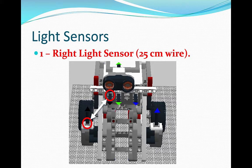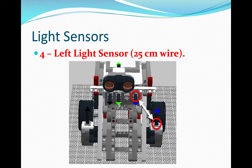Now, the front. The right light sensor is connected to number 1, 25cm wire. The left light sensor is connected to 4, again 25cm wire.